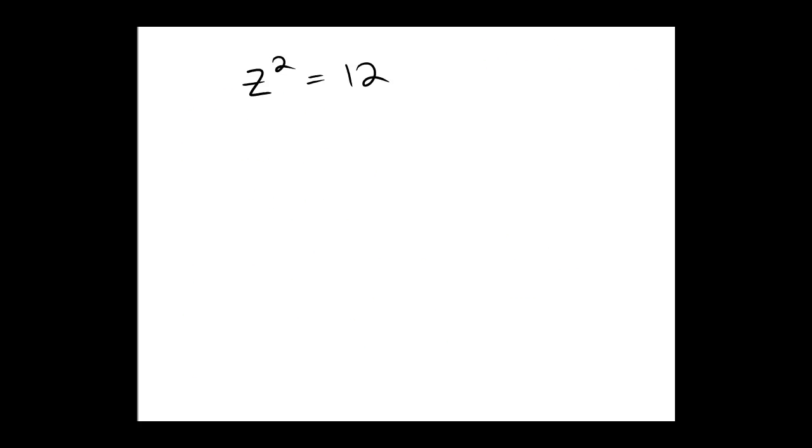So pause the video and try this one on your own. z squared equals 12. On the board here, I'm going to do it in orange. Square root of z squared, square root of 12. The square root of z squared is z. 12 is going to break down into a 4 times a 3, and 4 breaks down into a 2 times a 2.